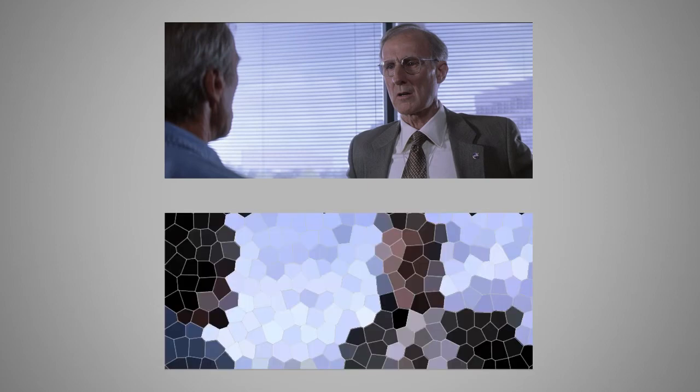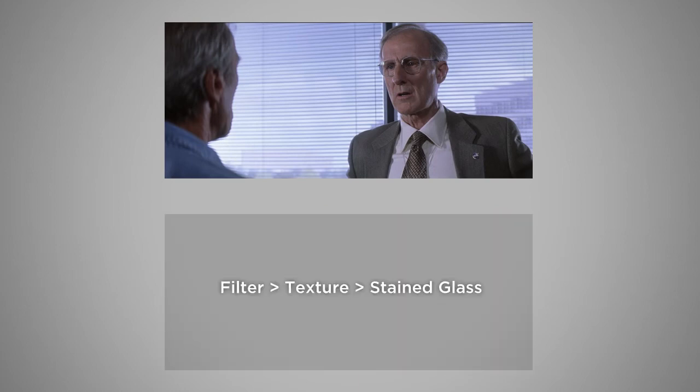And if for whatever reason you're not a huge fan of the way that Mosaic looks, you can try one called Stained Glass. This is a similar setting, except it gives you more irregular looking shapes. And the way you find this is in Filter, Texture, Stained Glass.